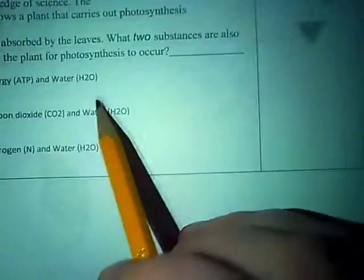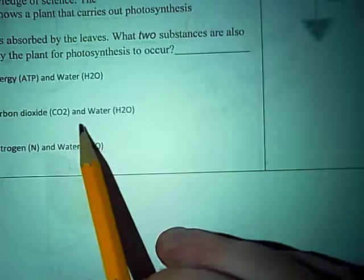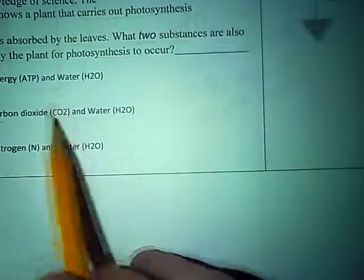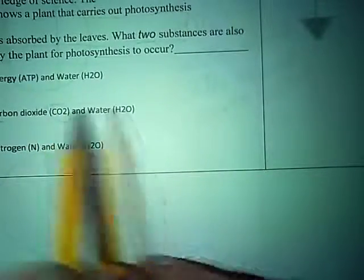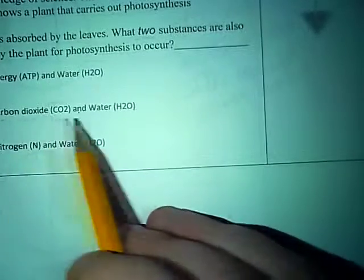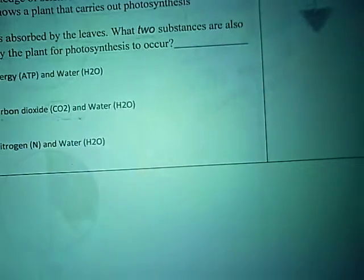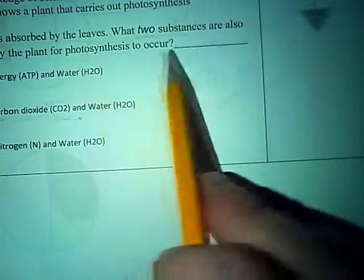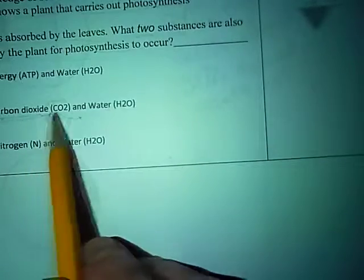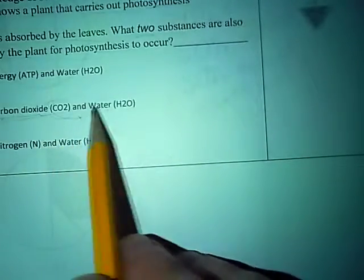The correct answer is carbon dioxide, or CO2, and water, H2O. That's something you just have to remember. In order for photosynthesis to occur, carbon dioxide and water are taken in by the plant.